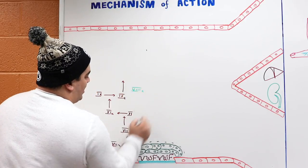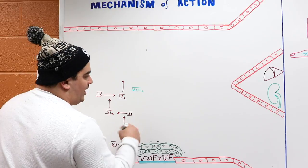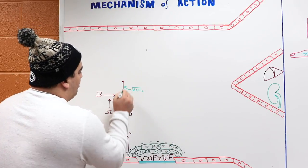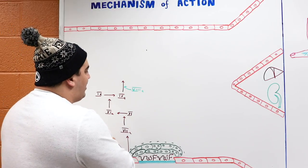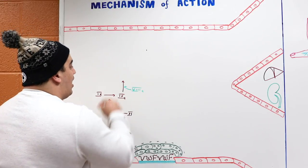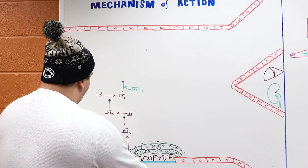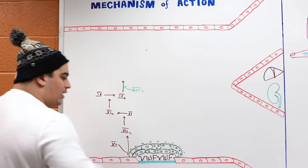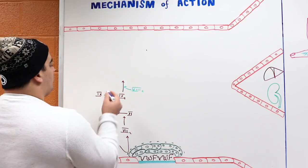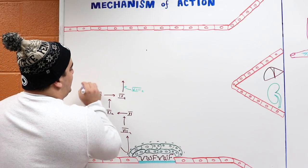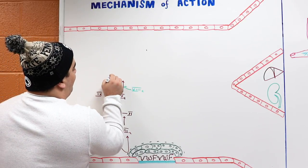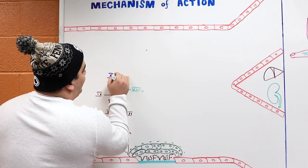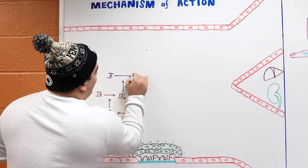Factor 8 gets activated through thrombin. Factor 9 and factor 8 combine, and then they activate another molecule called factor 10. Factor 10 gets activated.